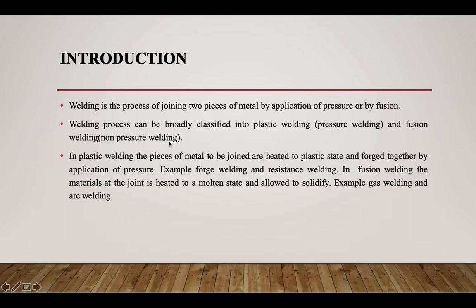In plastic welding, the pieces of metal to be joined are heated to a plastic state and forged together by application of pressure. Examples of this type of welding are forge welding and resistance welding, which represent plastic welding or pressure welding.